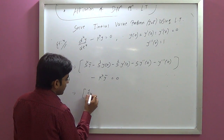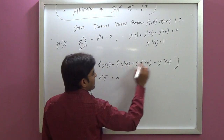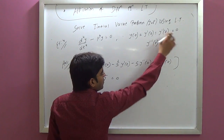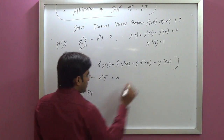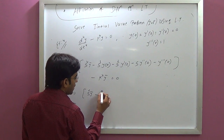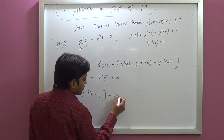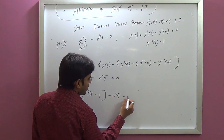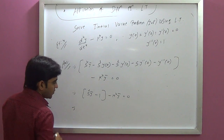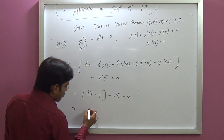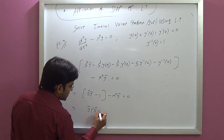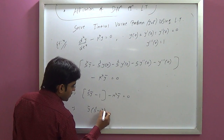Second step: s⁴·Y-bar minus k⁴·Y-bar equals 1, so (s⁴ minus k⁴)·Y-bar equals 1.